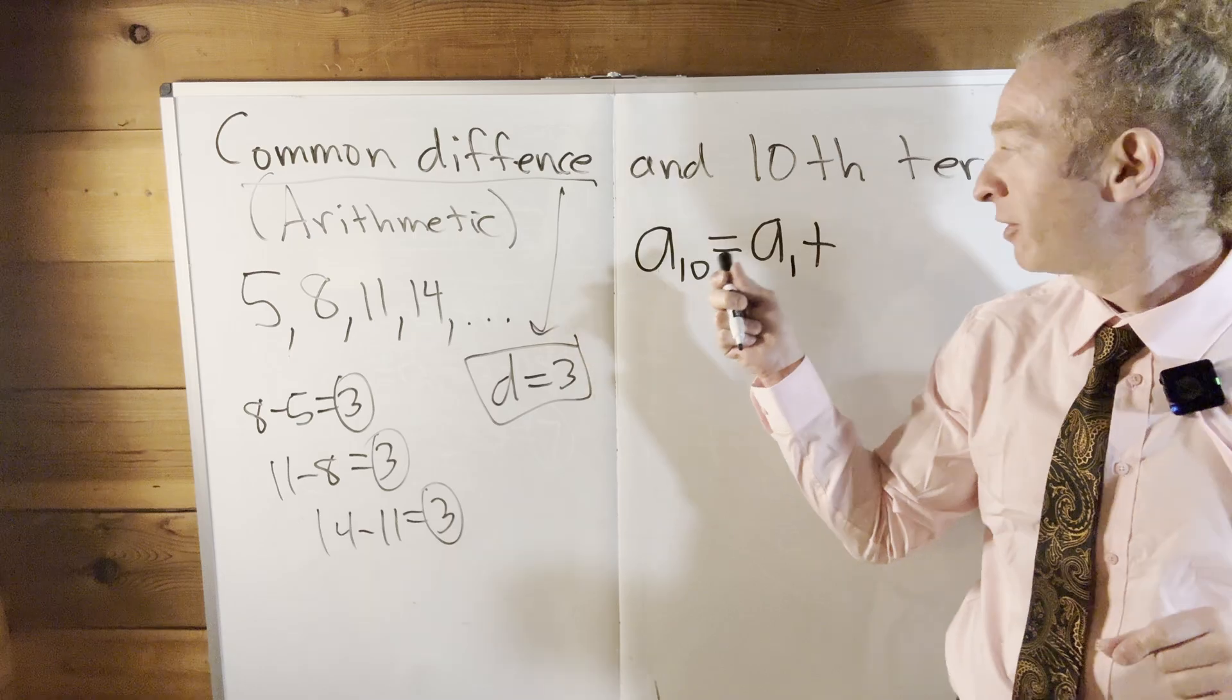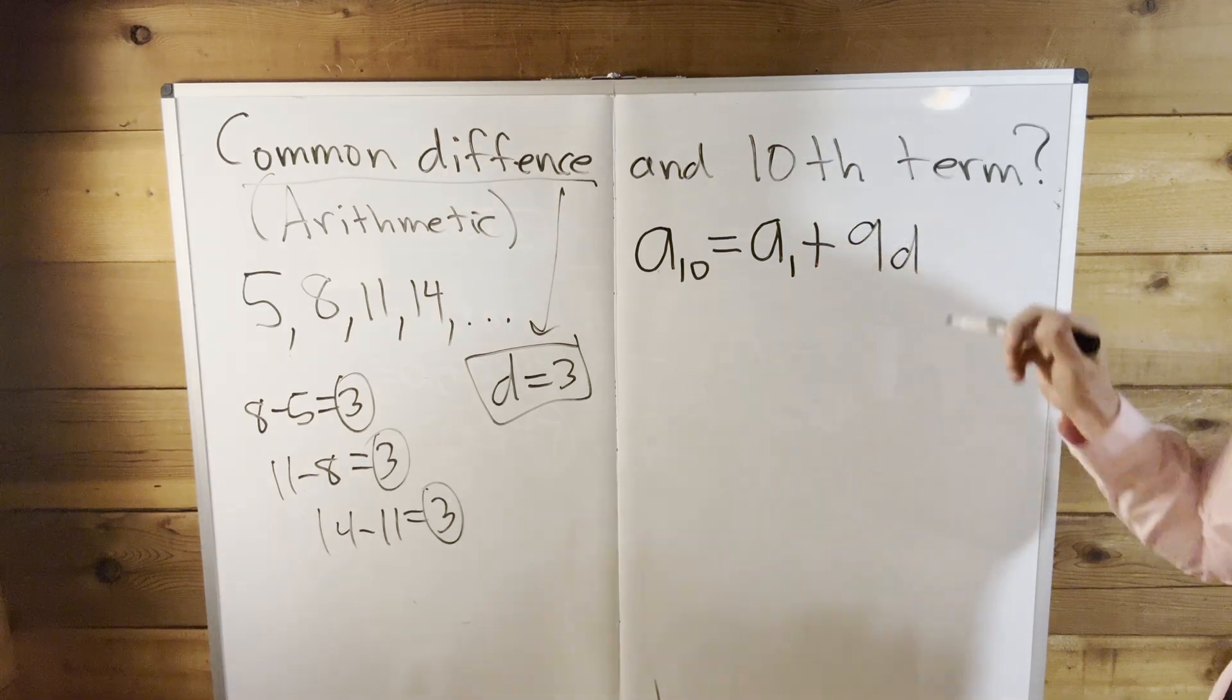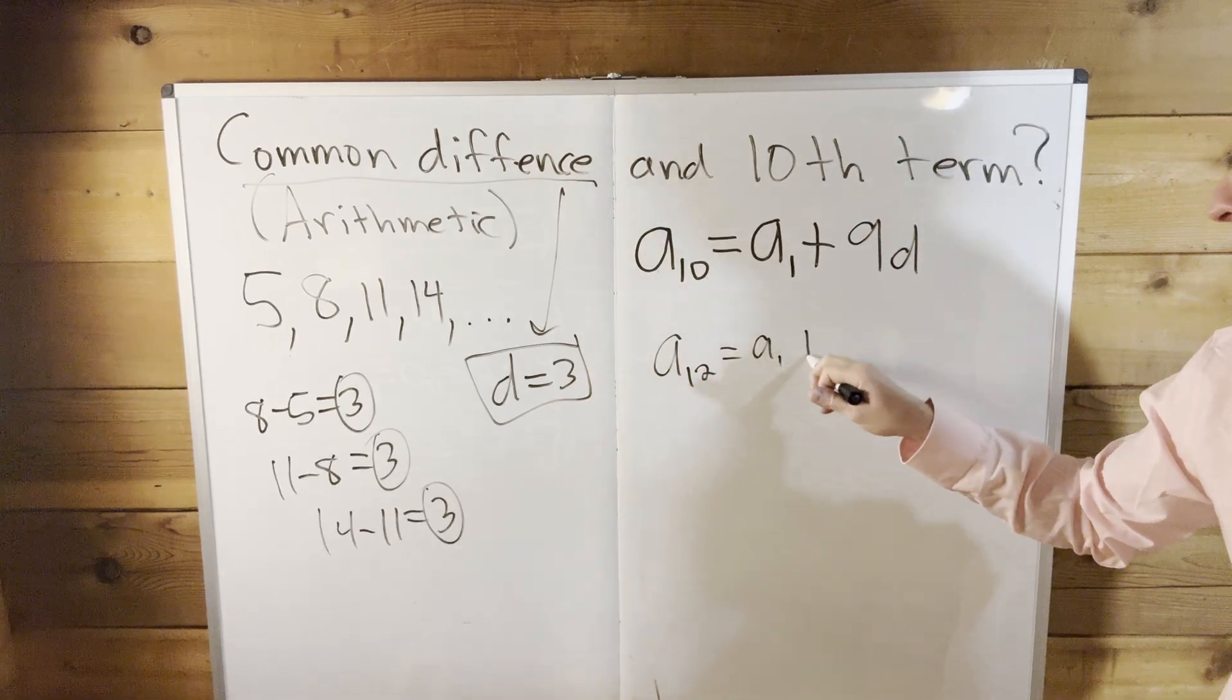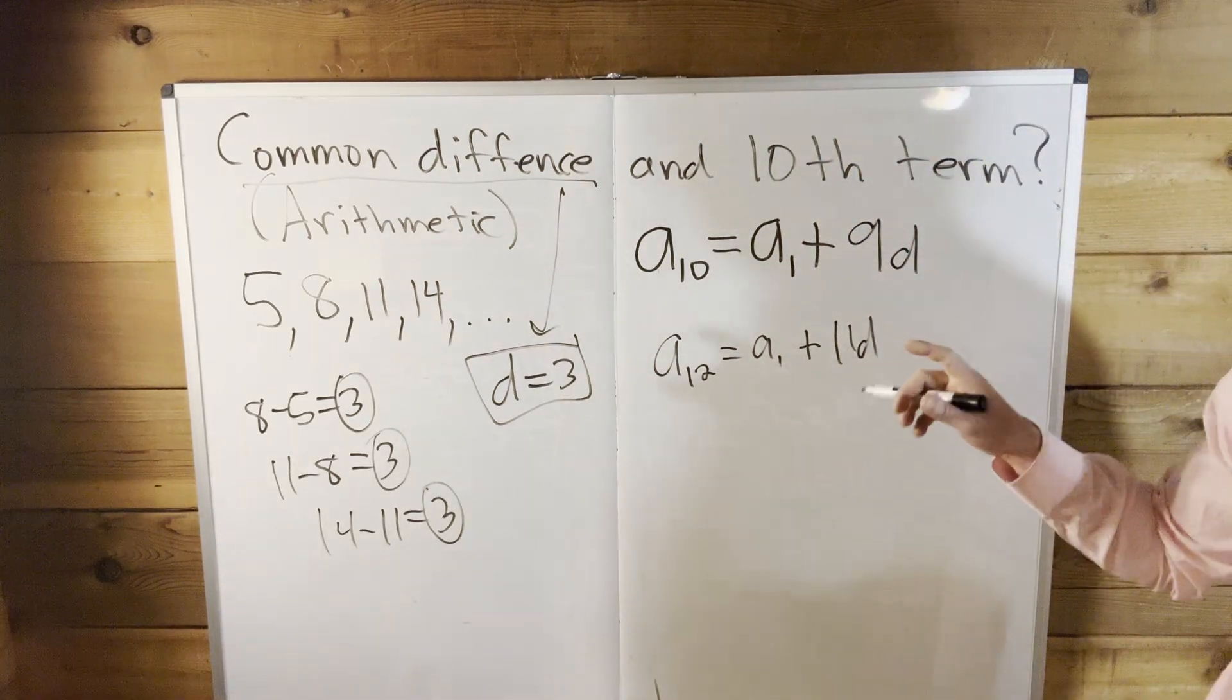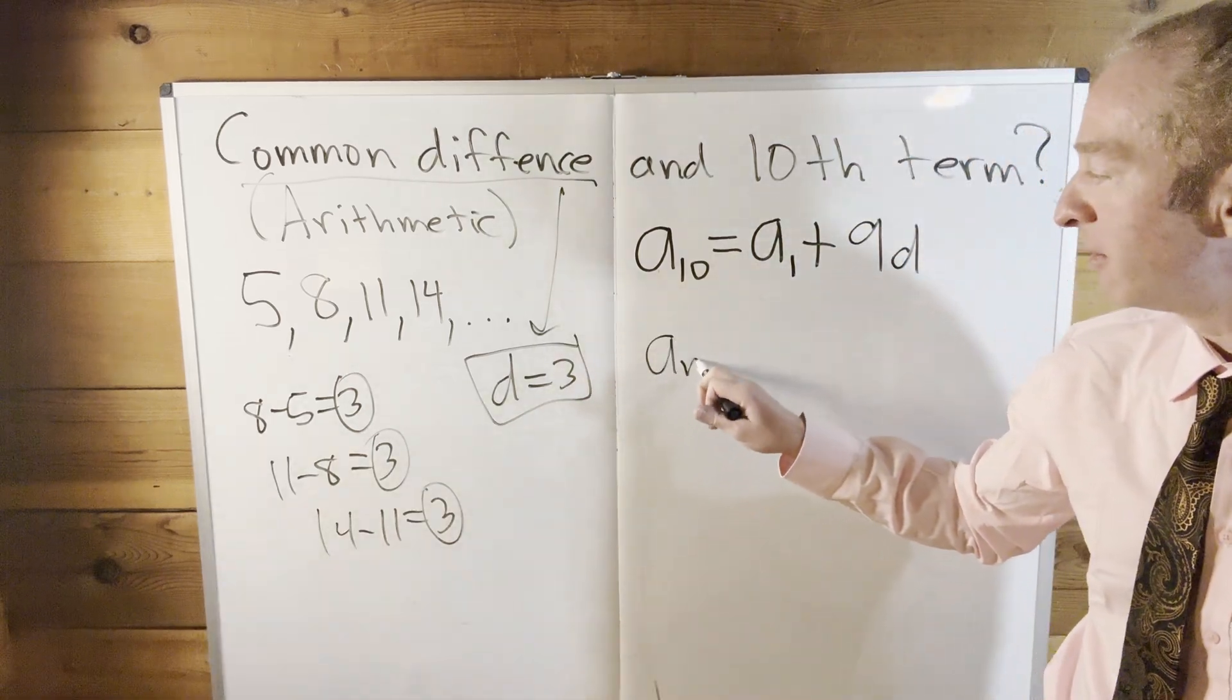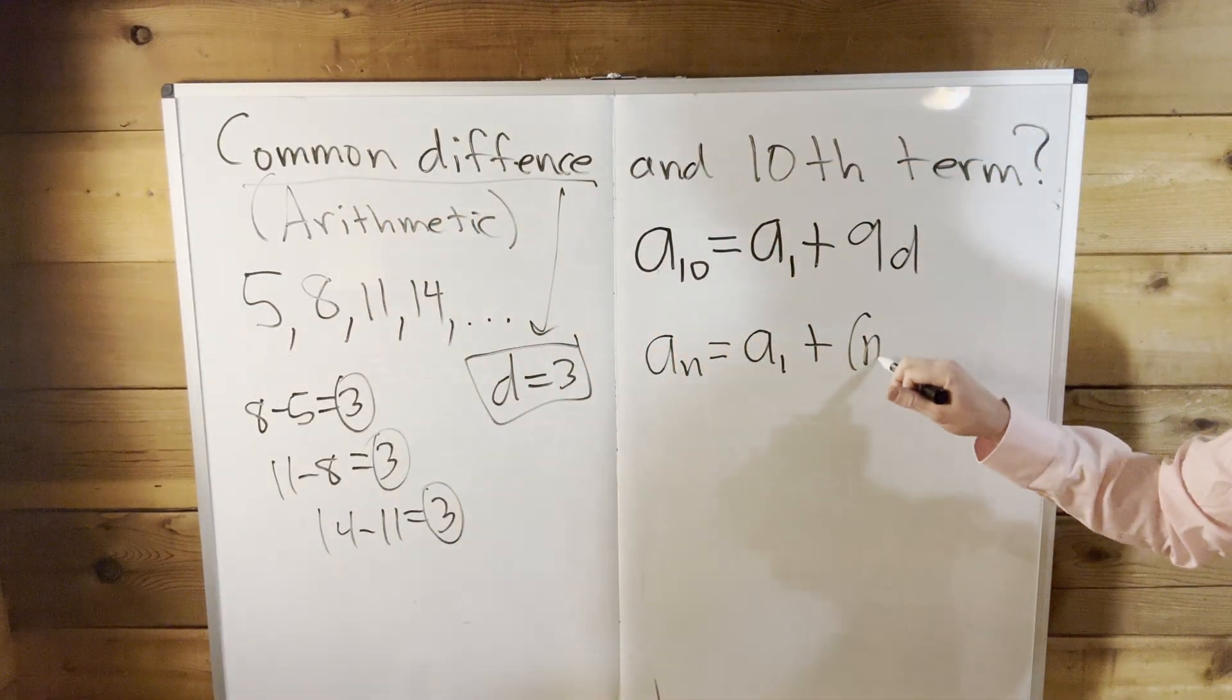So to go from the first term to the 10th term, you have to add nine common differences. Okay, so let's just pretend if it was the 11th term or the 12th term, it would be 11 common, always one less, right? Pretty cool, right? And in general there's a formula for this, just to really make the point. If you're trying to find the nth term, how do you get there from the first term?